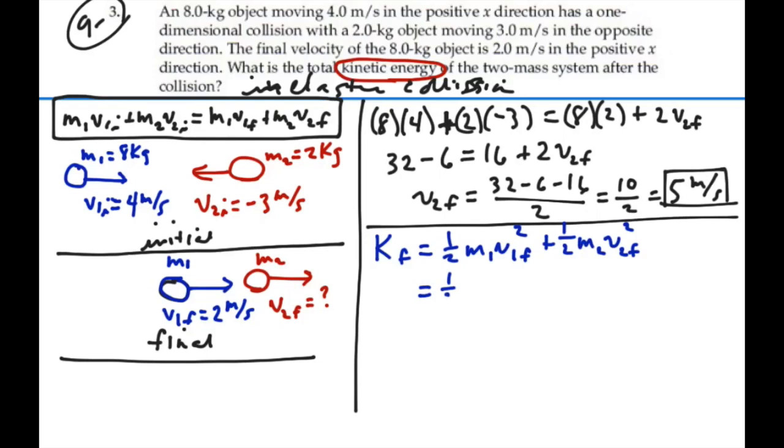So this will be 1 half times 8 times final velocity 2 meters per second squared, plus 1 half times 2 final velocity 5 meters per second squared.